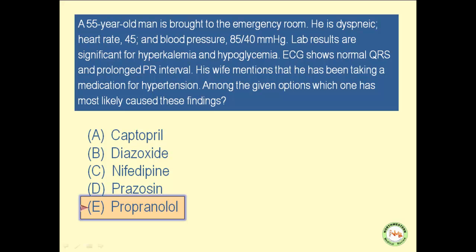Conditions associated with a high level of renin and angiotensin. How does propranolol cause hypoglycemia? Sympathetic beta-2 stimulation releases glucagon. Glucagon in the liver promotes glycogenolysis and gluconeogenesis, and as a result, it causes hyperglycemia. Propranolol is a non-selective beta-blocker. Therefore, it inhibits glucagon secretion via inhibition of the beta-2 receptors, and as a result, it causes hypoglycemia.